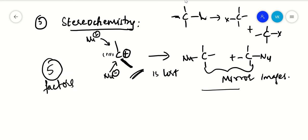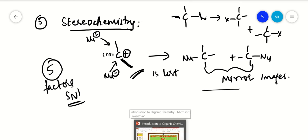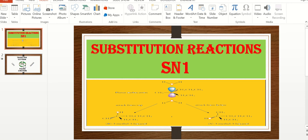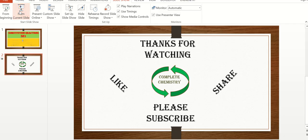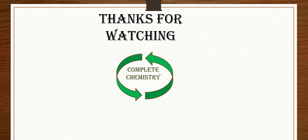So there are five factors responsible for SN1 reactions. SN1 reactions are a very important topic in intermediate and degree-level engineering chemistry. Please watch, like, share, and subscribe to Complete Chemistry. Thank you.